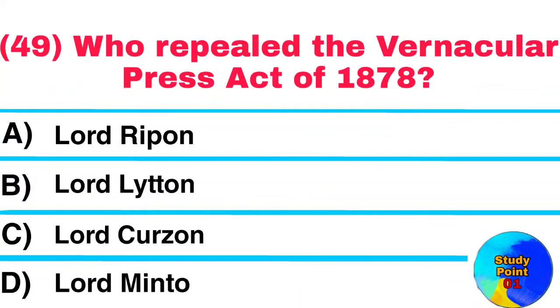Question No. 49. Who repealed the Vernacular Press Act of 1878? Answer: Lord Rippon.